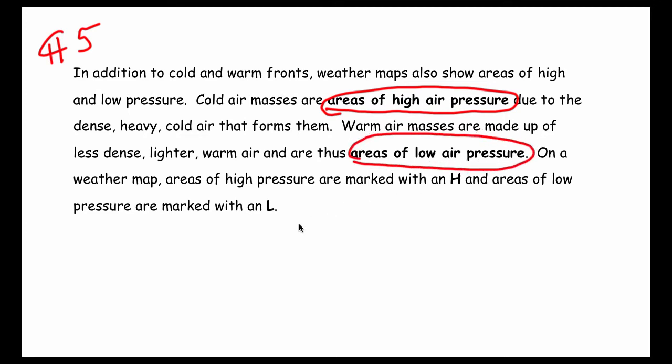On a weather map, areas of high pressure are marked with an H and areas of low pressure are marked with an L. Let's briefly take a look at a weather map and make sure we understand these symbols.